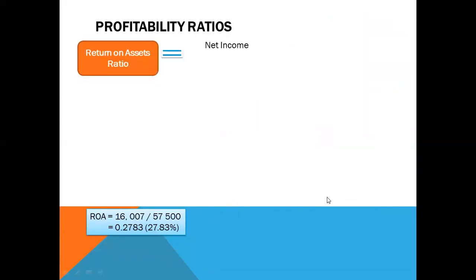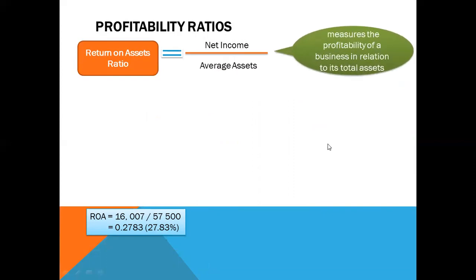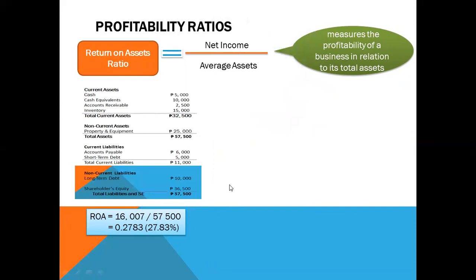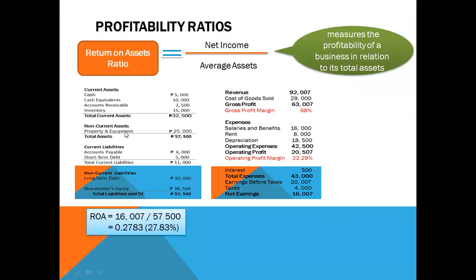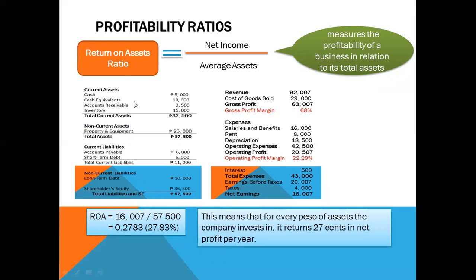The return on assets ratio equals net income over average assets, and measures the profitability of a business in relation to its total assets. Using the balance sheet and income statement from the previous examples: net income of 16,007 divided by average assets of 57,500 gives a return on assets of 0.2783, or 27.83%. This means that for every peso of assets the company invests in, it returns approximately 0.27% in net profit per year.